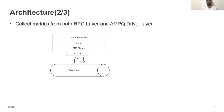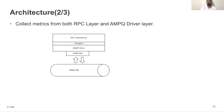This is a simplified version of the architecture. We have the RPC client-server on top, then the transport layer and AMQP driver forming the Oslo Messaging layer, then the RabbitMQ queue where all messages go in. When these messages go in, a copy is also sent to the Oslo Metrics layer.